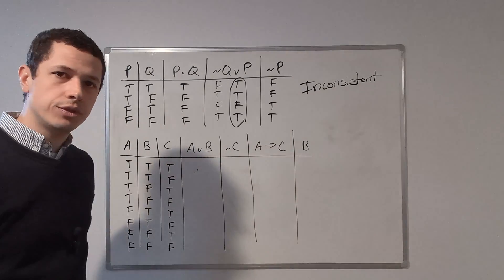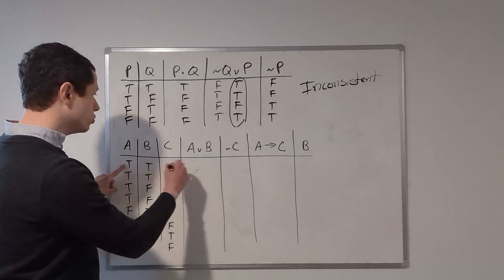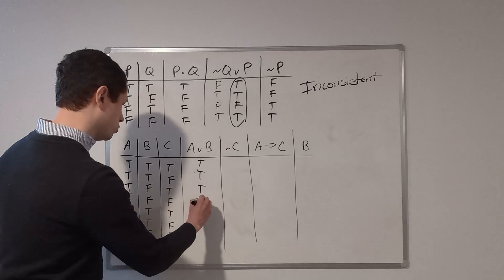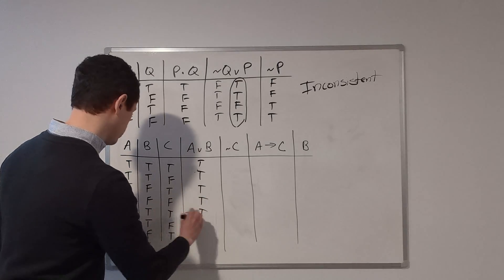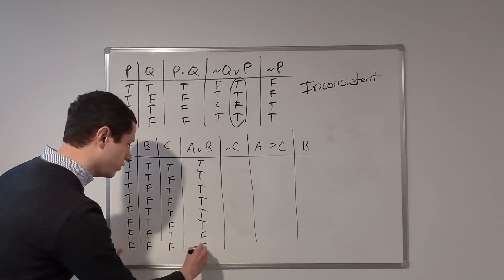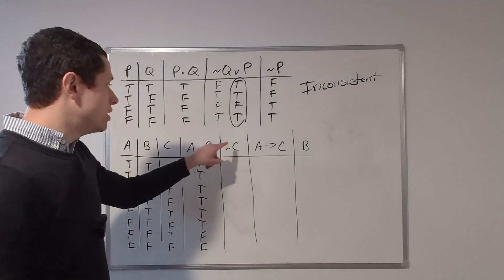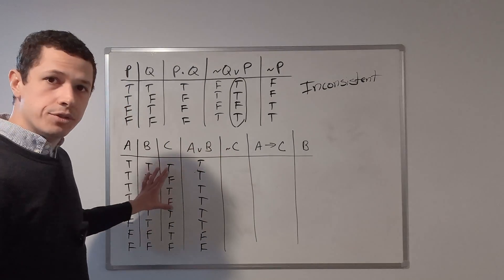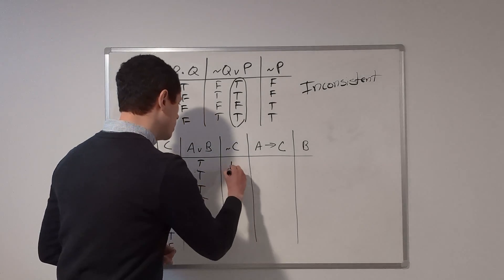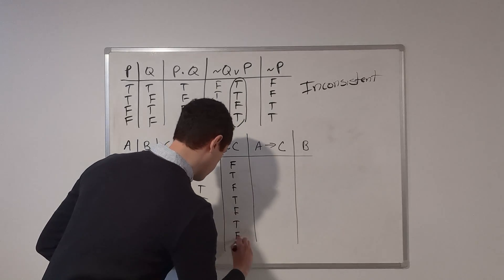Let's calculate these statements. We'll start with the disjunction A∨B: T∨T = T, T∨T = T, T∨F = T, T∨F = T, F∨T = T, F∨T = T, F∨F = F, F∨F = F. Next, ¬C is just the opposite of C. C is T, F, T, F, T, F, T, F, so ¬C is F, T, F, T, F, T, F, T.